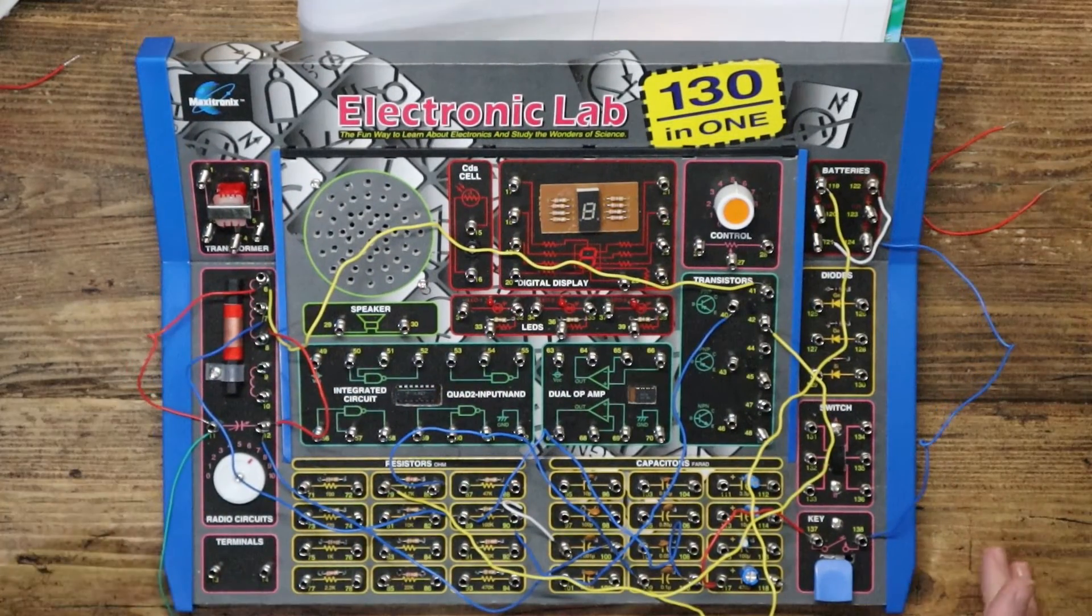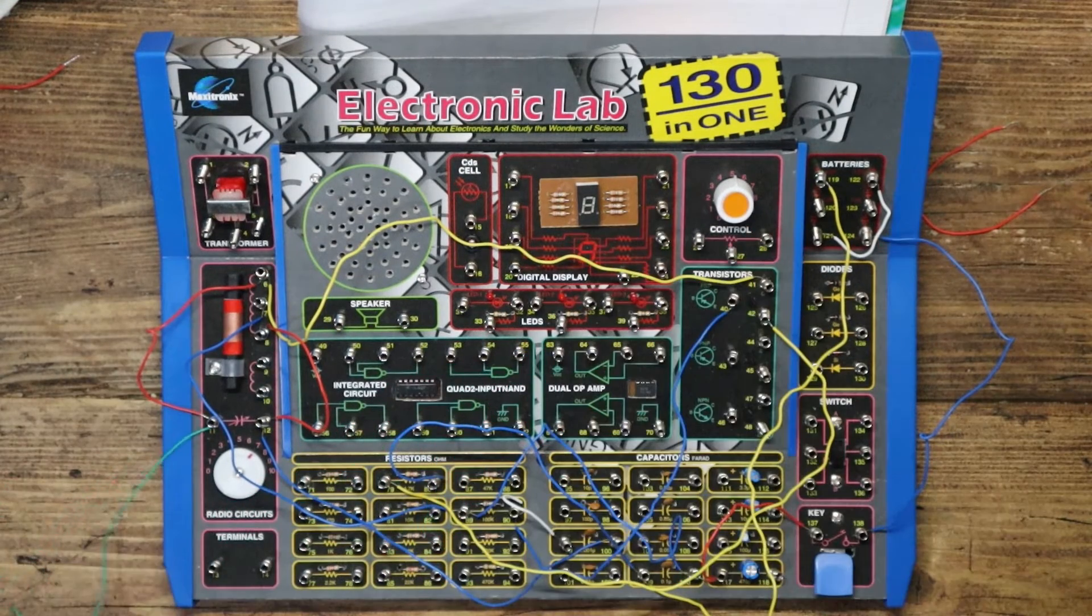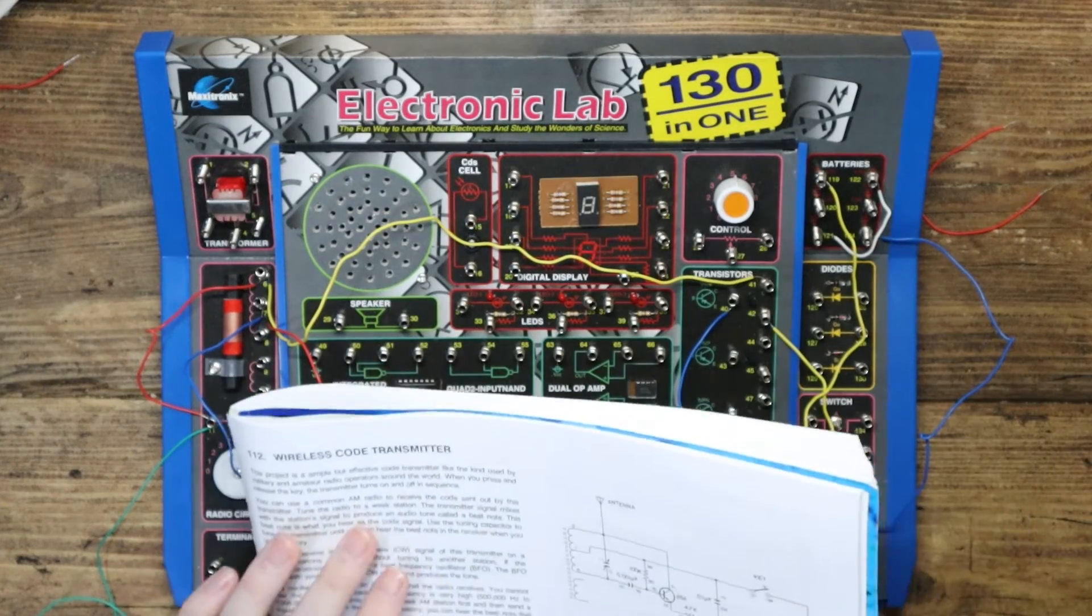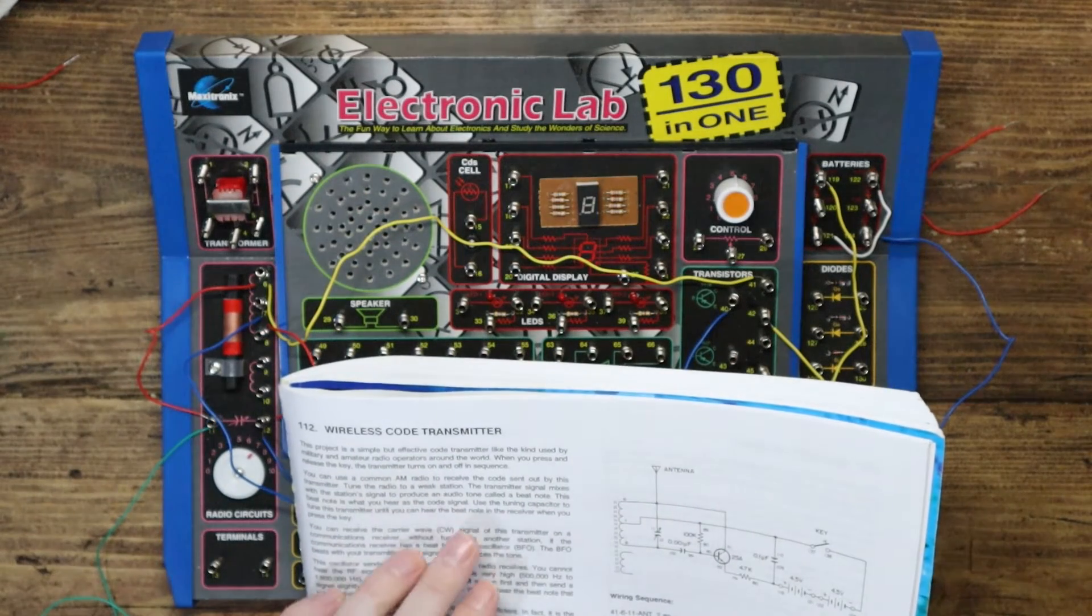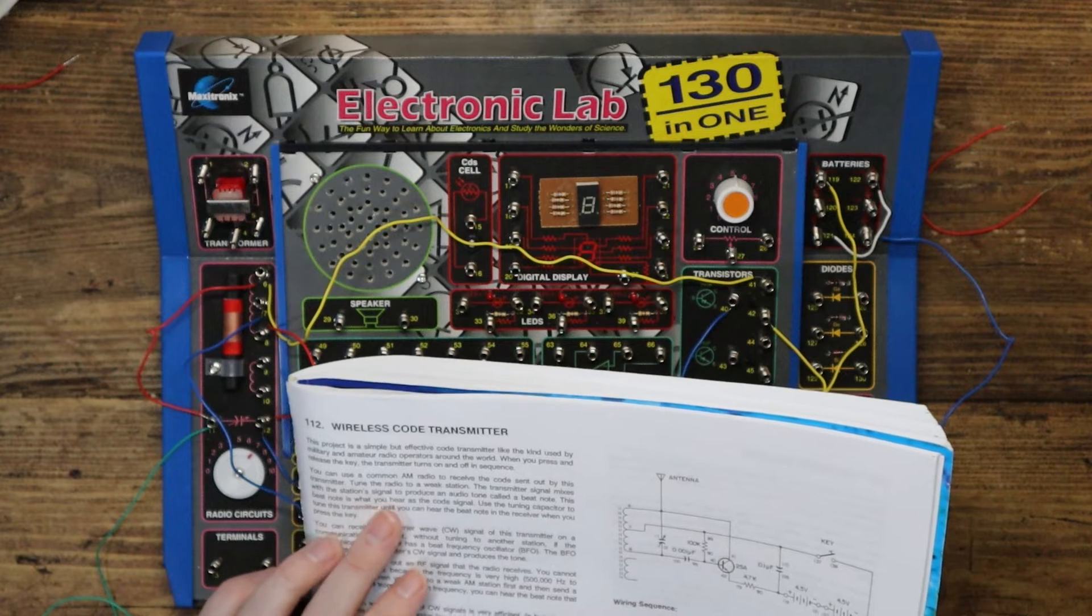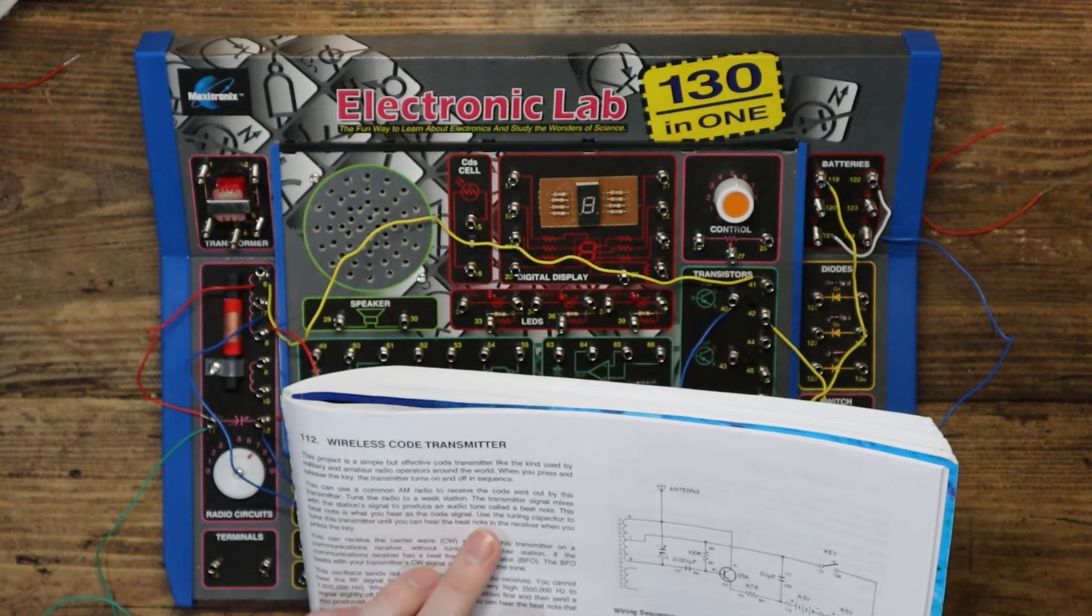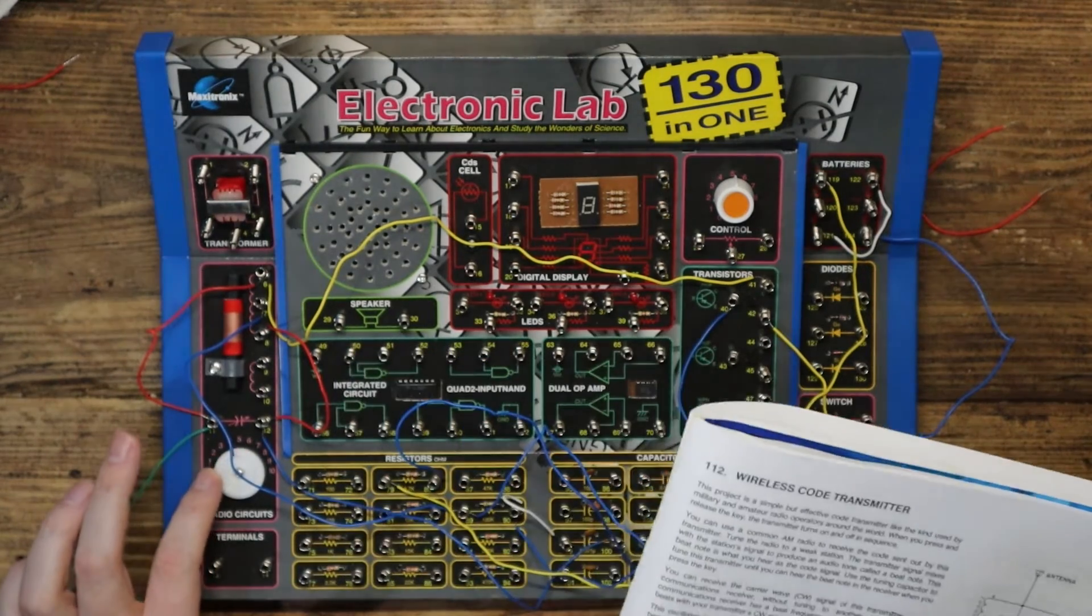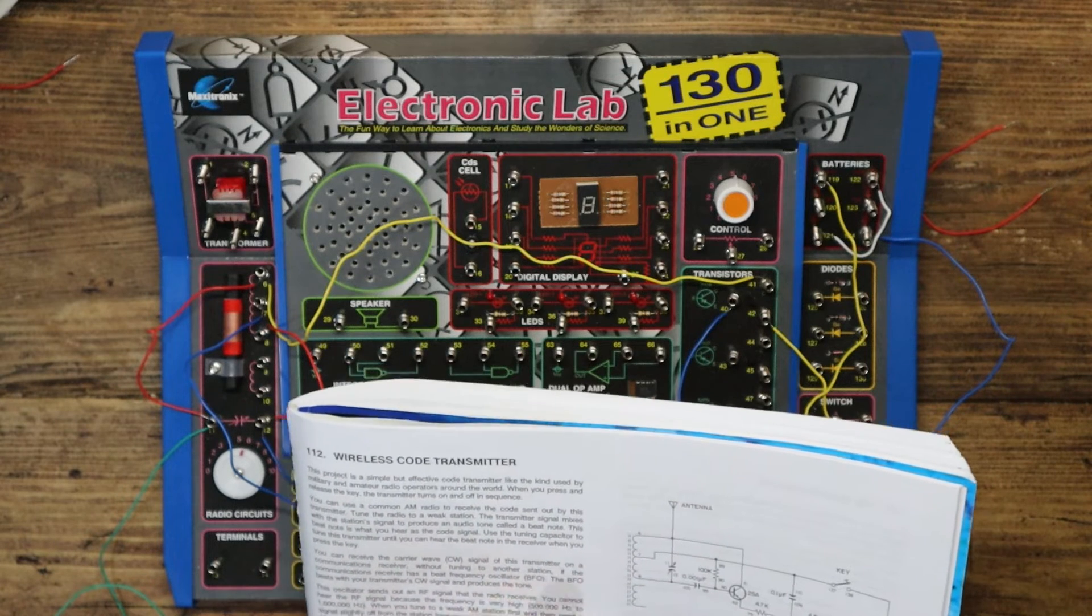So we've done all the wiring for this one with this very long aerial antenna lead on the end. And it says here, you can use a common AM radio to receive the code sent out by the transmitter. Tune the radio to a weak station. The transmitter signal mixes with the station signal to produce an audio tone called a beat note. This beat note is what you hear as the code signal. Use the tuning capacitor, which I think is this here, to tune the transmitter until you can hear the beat tone in the receiver when you press the key.